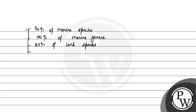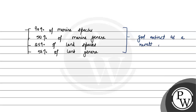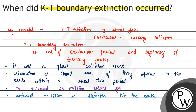56% of land genera were destroyed. And most species of dinosaurs also became extinct as a result of this KT boundary mass extinction. Among all the mass extinctions we study, the KT boundary mass extinction ranks third in severity. It occurred 65 million years ago — that was what the question asked us. I hope you understood it well. Best of luck and thank you.